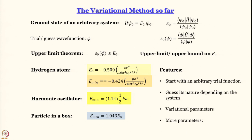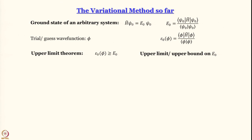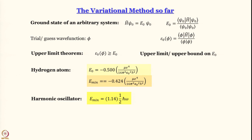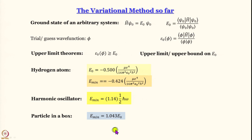To do that, we once again recap what we have learned. I will not go through all the H-psi equals E-psi formalism, but we have studied the upper limit theorem and used it. For the hydrogen atom we obtained a value of 0.424 whereas the actual value is 0.5. For the harmonic oscillator we have a deviation of about 14 percent, and for the particle in a box using a trial wave function we got a deviation of about 4 percent.